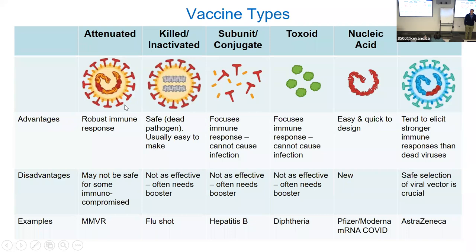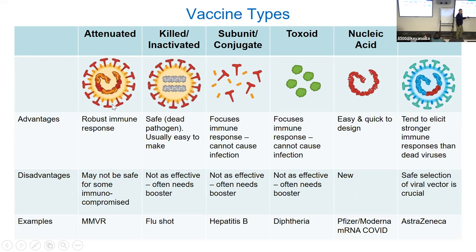They're recommending boosters for people with weak immune systems — usually older people. We know that six months after infection or vaccination, you are more likely to get infected with COVID-19. But the real question is: are you more likely to get severe disease? The answer is probably not. It takes time to really understand the nuances — you have to consider age, vaccination status, whether someone had AstraZeneca then Pfizer, or two Pfizer doses. It's going to take a few years to fully understand.